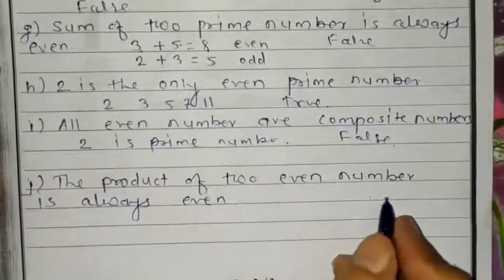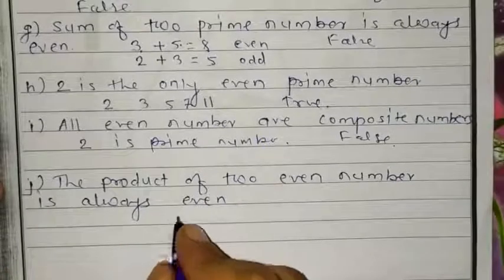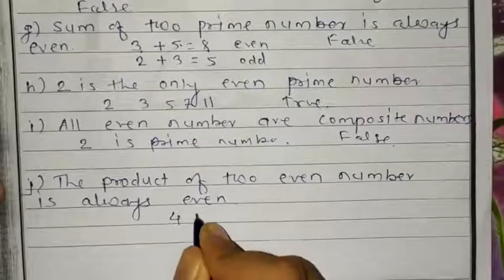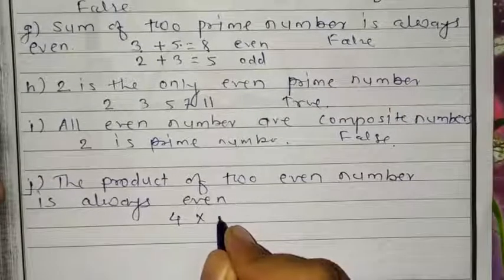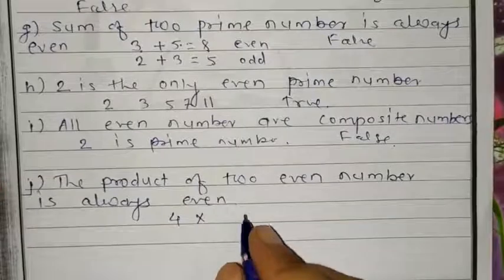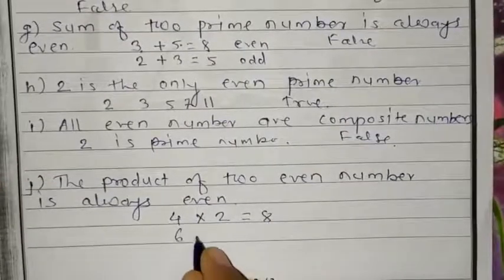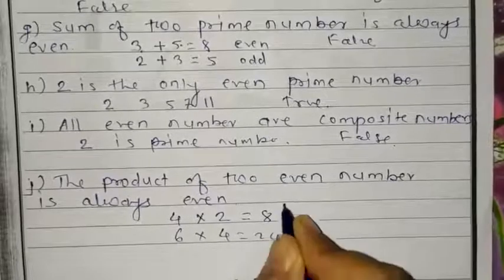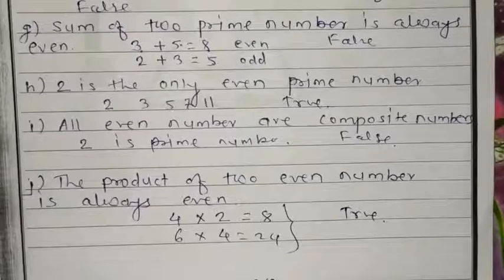Part J: the product of 2 even numbers is always even. Taking even numbers 4 and 2: 4 times 2 is 8. Taking 6 and 4: 6 times 4 is 24. The answer is coming as even in both cases. So the statement is true. I hope you understood question number 2.